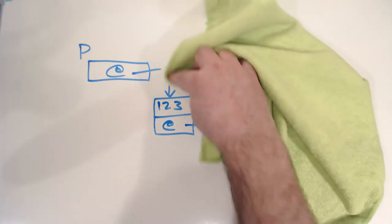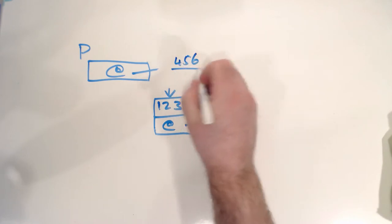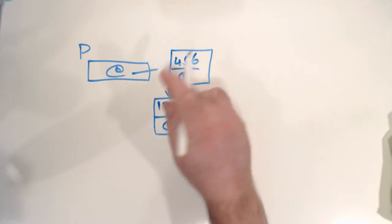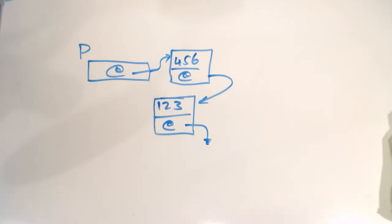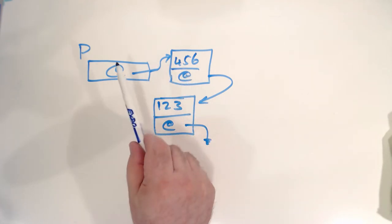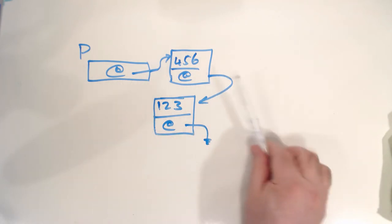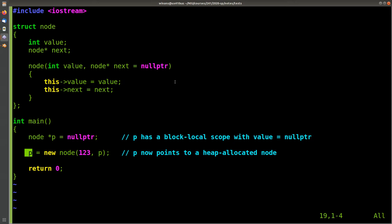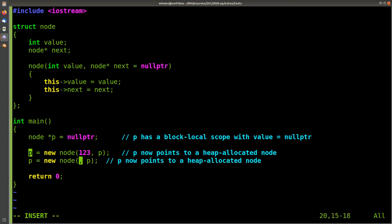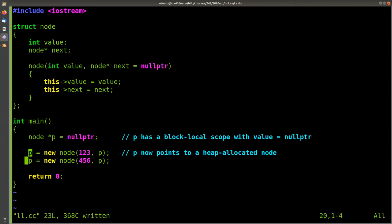Now, what if we want to modify our data structure and put another node in it? Let's say we want to put a 4,5,6 node here and have it point to the 1,2,3 node and make p point to it. This is starting to look like a list — a singly linked list. It is a single pointer that goes between each one of the nodes. So the first element is 4,5,6 and the second element will have the 1,2,3 value. We can just keep playing this game: allocate another node, make the next pointer of this new 4,5,6 node point to whatever p used to point to — the 1,2,3 node — then update p to point to the 4,5,6 node. That matches our diagram exactly.